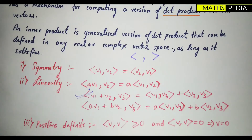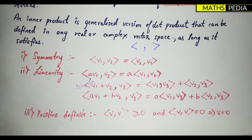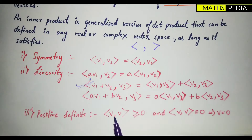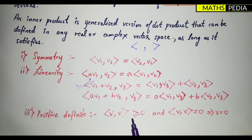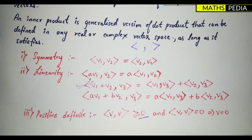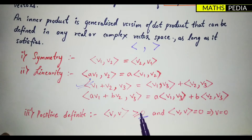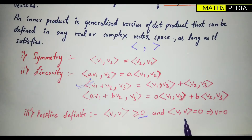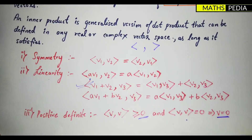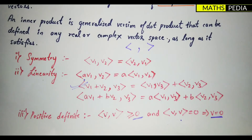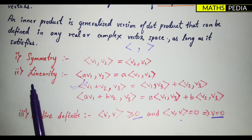The third and last condition is the positive definite property. For a vector v, the inner product of v with itself must be greater than or equal to zero. If the inner product of v with itself equals zero, that implies the vector v is the zero vector. You have to remember these three conditions: symmetry (conjugate), linearity, and positive definite property.